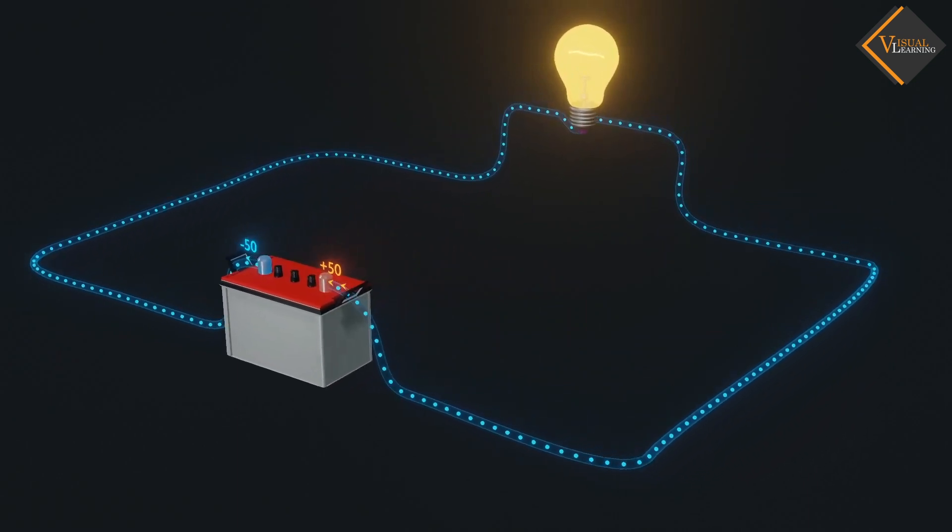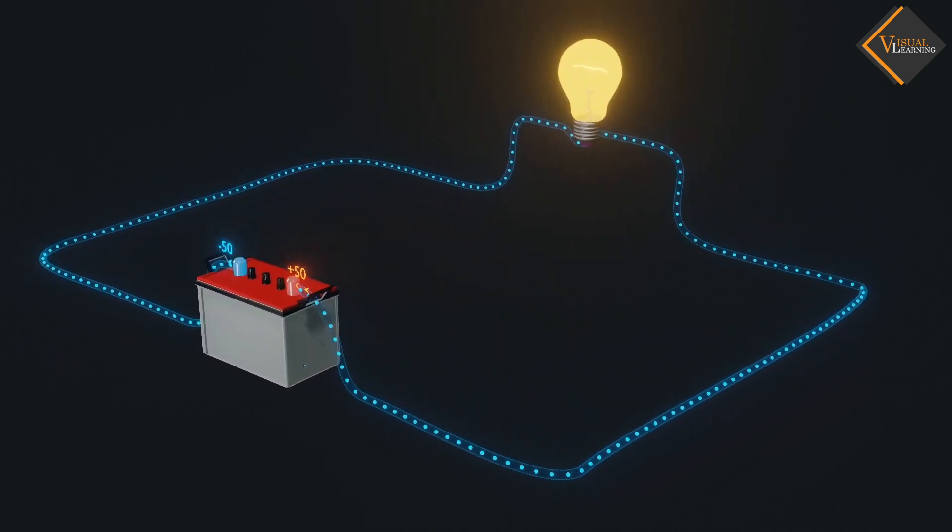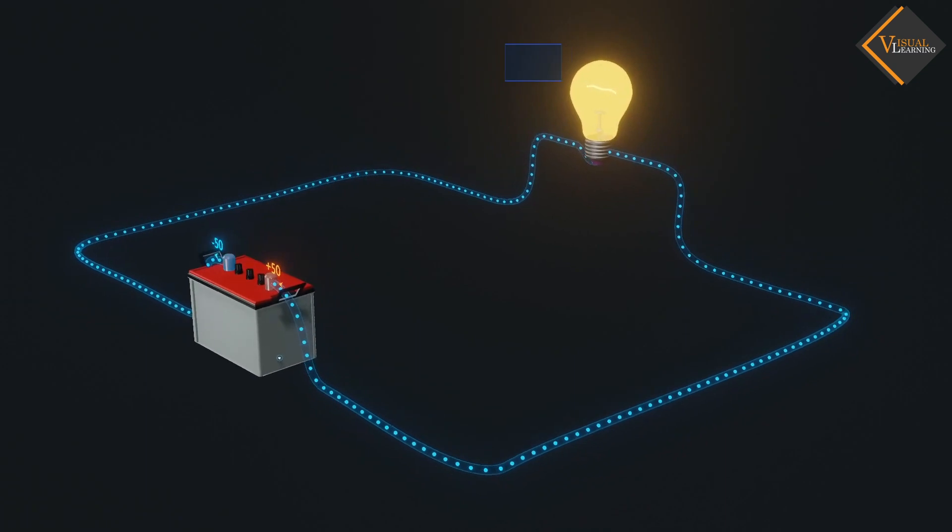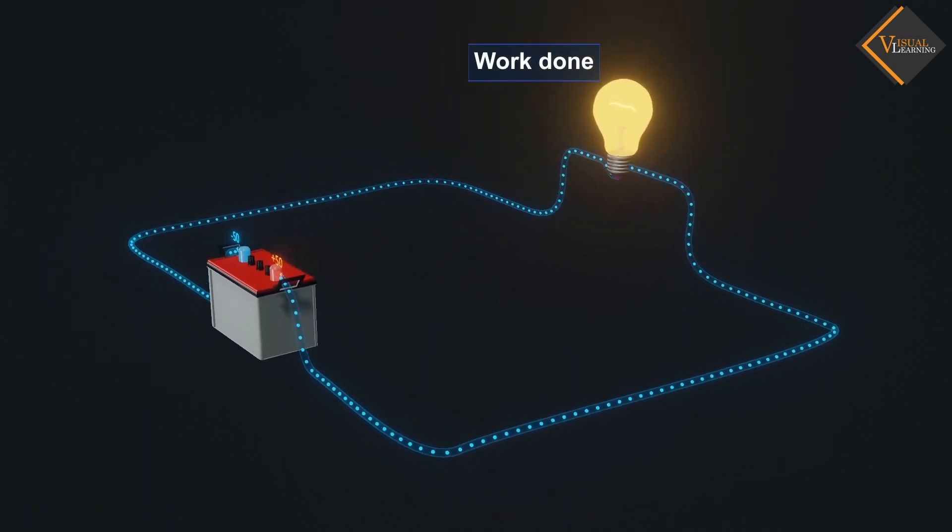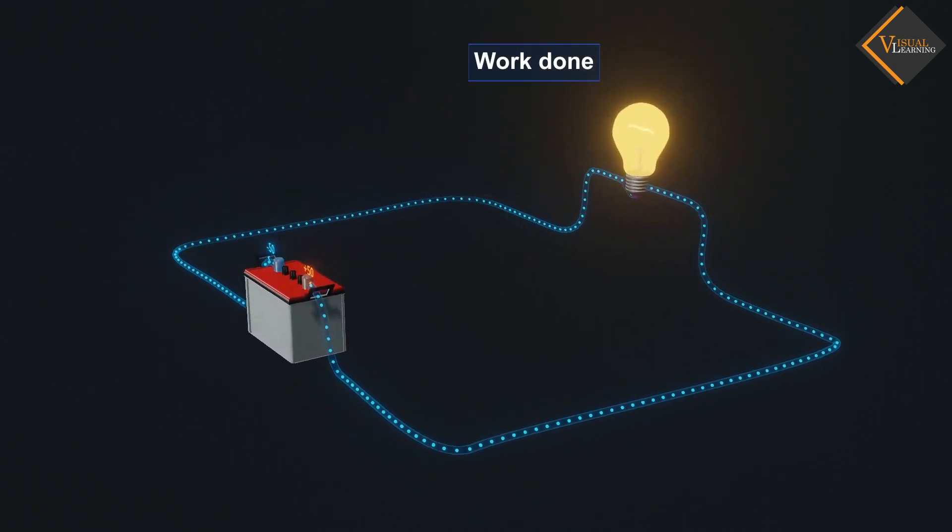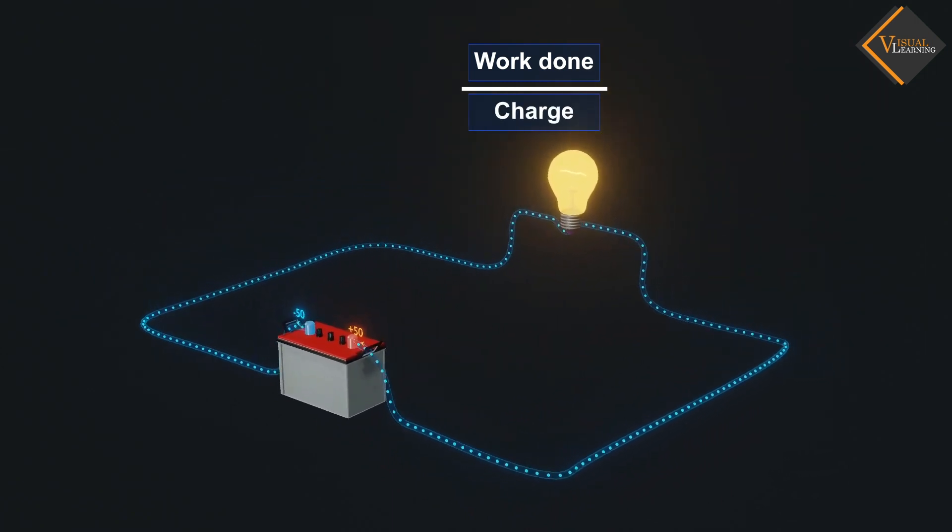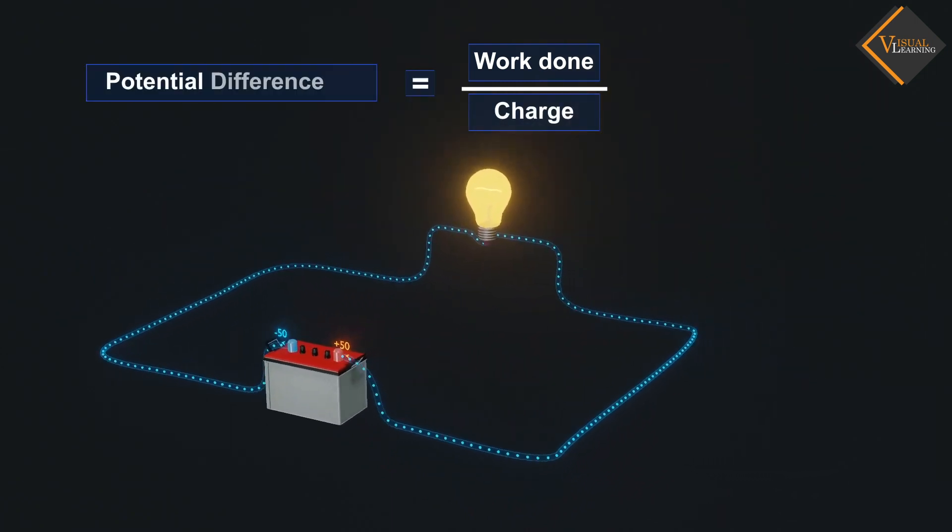Now, when electrons flow from negative to positive terminal, work is done by the electron. And this work done per unit charge can be defined as electric potential difference.